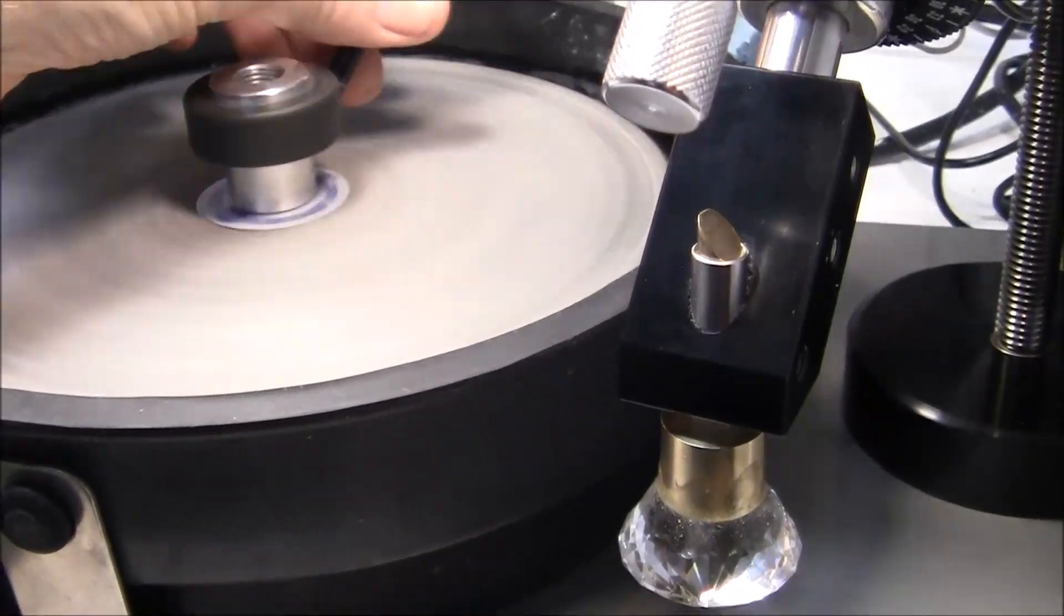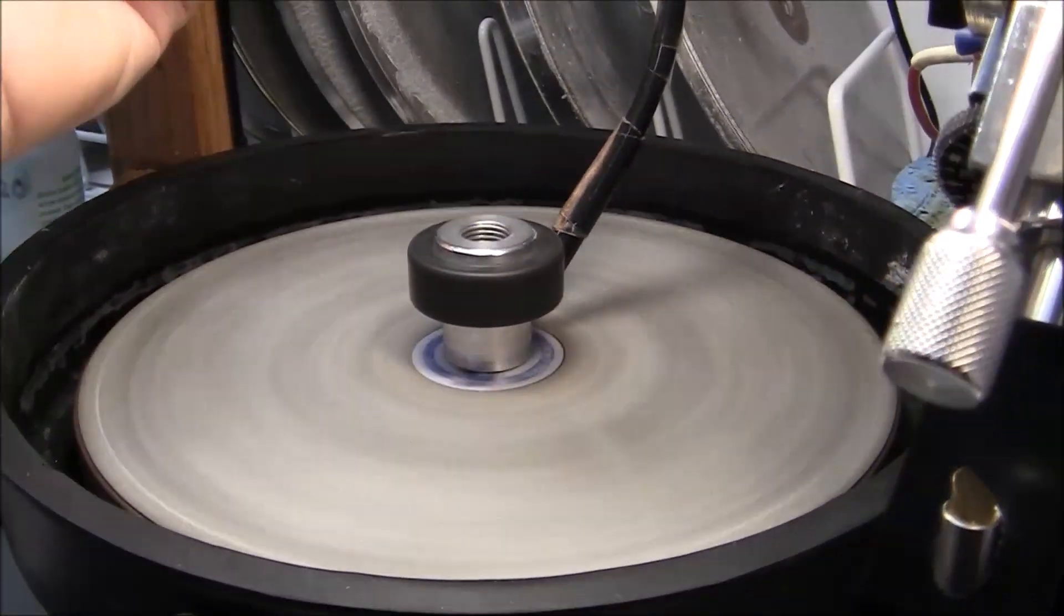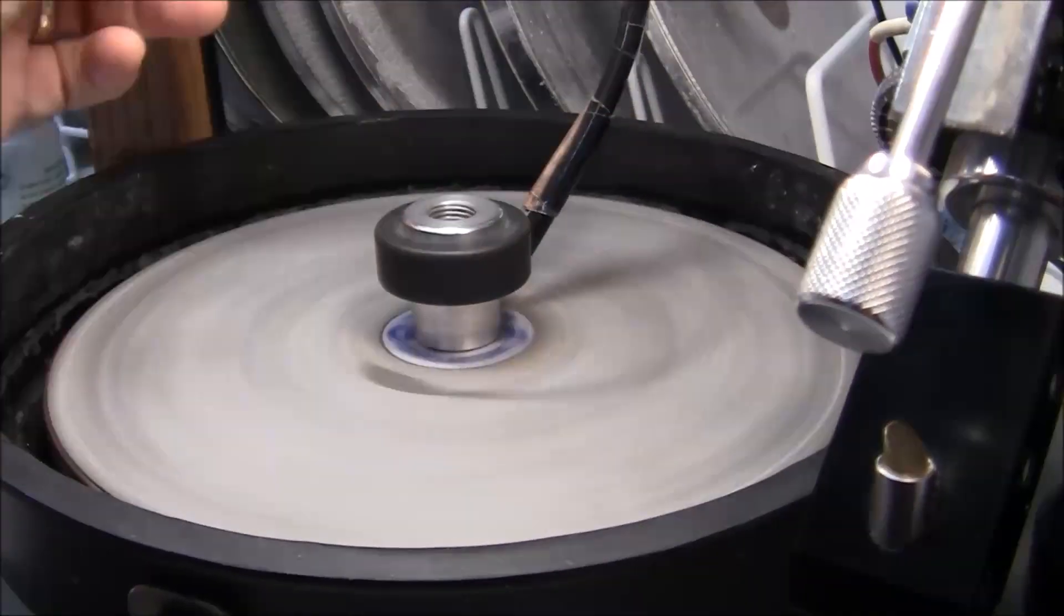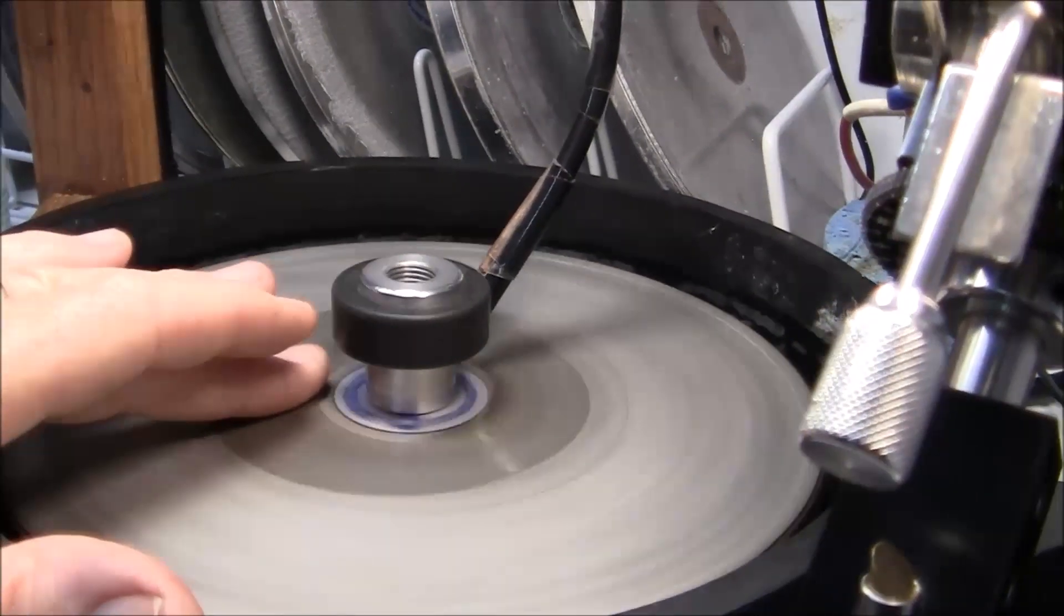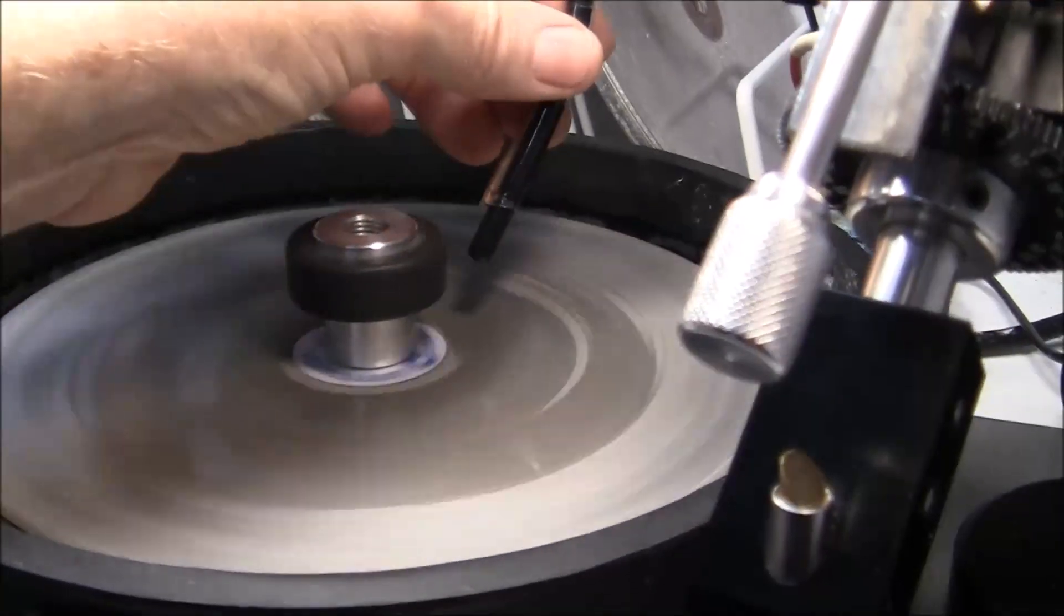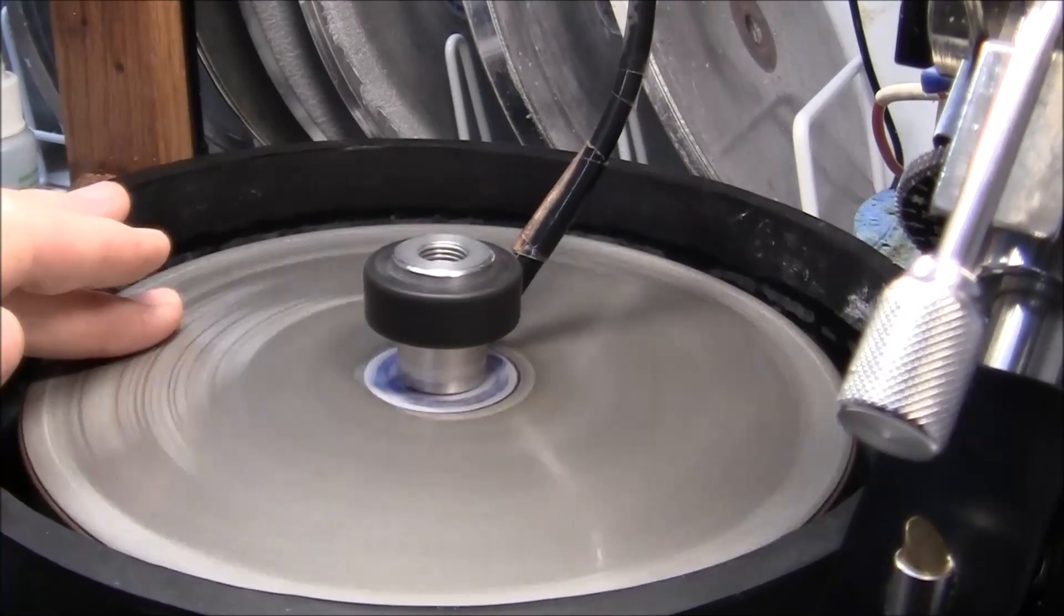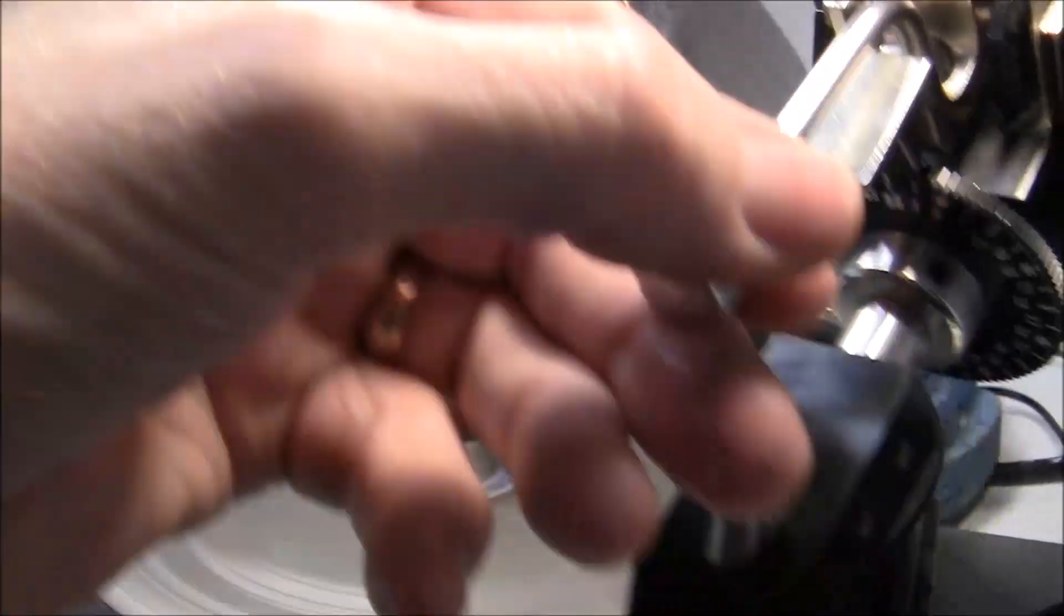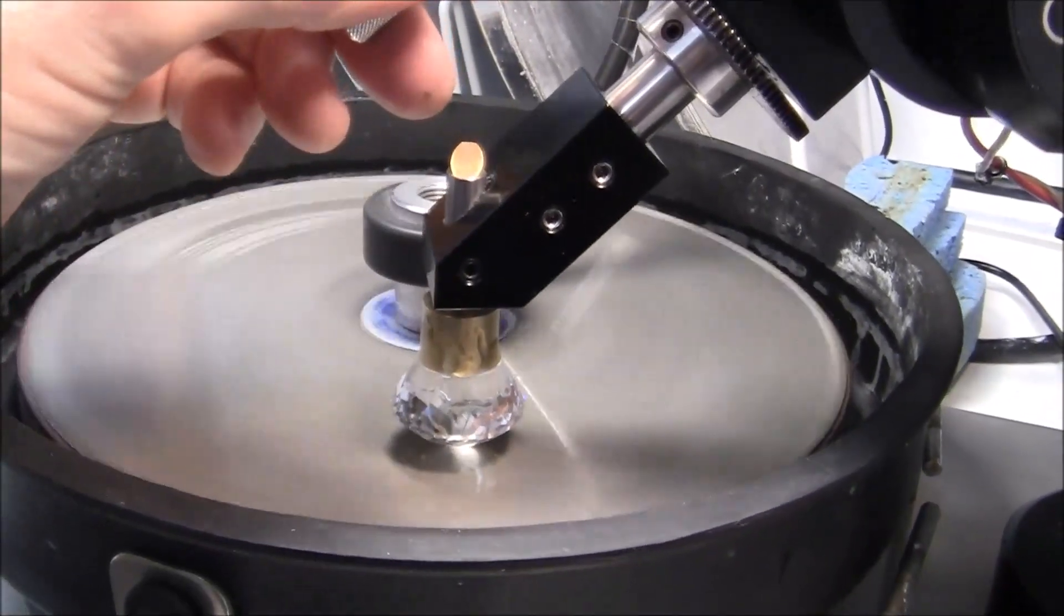Here, we're ready to cut the table of the gemstone. I've got the 45 degree adapter set up and aligned with the lap. Getting the water set up just right, our water drip, which has got to be used on diamond cutting laps. We're going to cut the table down until it just meets that last row of facets.